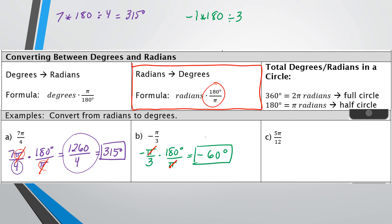Last one: 5π over 12. Multiply 5π/12 by 180/π. The pi's cancel. Then do 5 times 180 divided by 12 in the calculator — multiply the numbers on top of the fractions and divide by the number on the bottom. That comes out to 75 degrees. So 5π/12 radians is equivalent to 75 degrees.